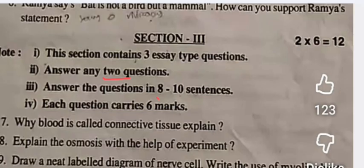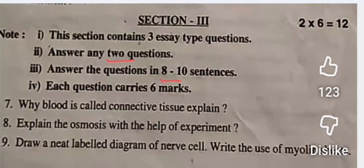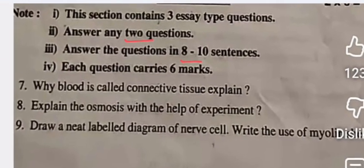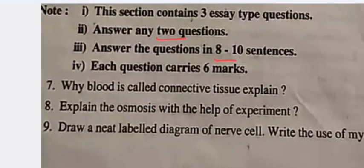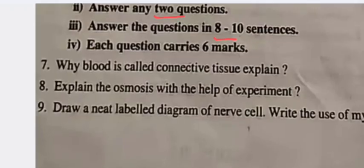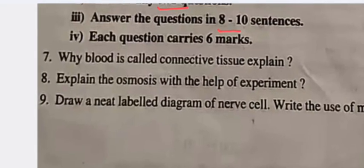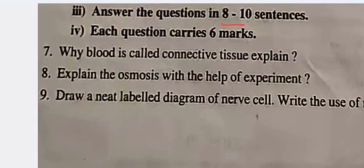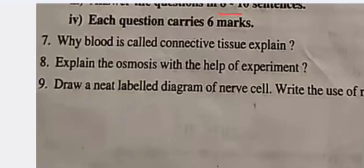You have to write the answer in 8 to 10 sentences and this carries six marks. The essay questions are: Why is blood called connective tissue? Explain. Explain osmosis with the help of an experiment. Draw a neat labeled diagram of a nerve cell and write its uses.